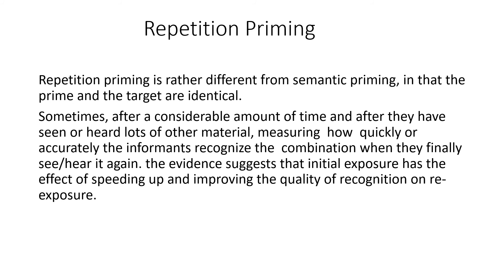Repetitive priming is different from semantic priming in that the prime and the target are identical. After a considerable amount of time and exposure to other material, informants are shown the same word again. The evidence suggests that the initial exposure speeds up and improves the quality of recognition upon re-exposure. When a word is encountered again and again, this repetitive process accelerates recognition and the user easily combines word sequences.